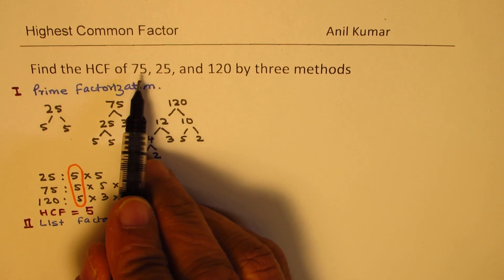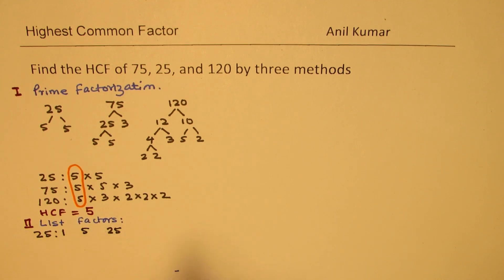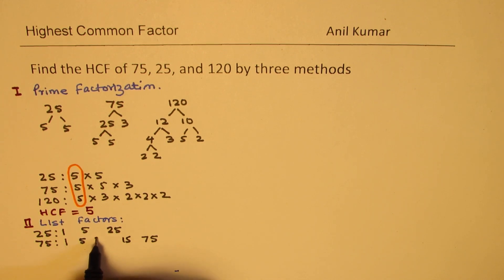So, if I list all the factors of 25, in that case, the factors of 25 are 1, 1 times 25 and then we have 5 times 5. As far as 75 is concerned, we have 1 times 75. We can write this as 5 times 5 times 1 and 3, 15 and then we can write this as 25 times 3 or 3 times 25.